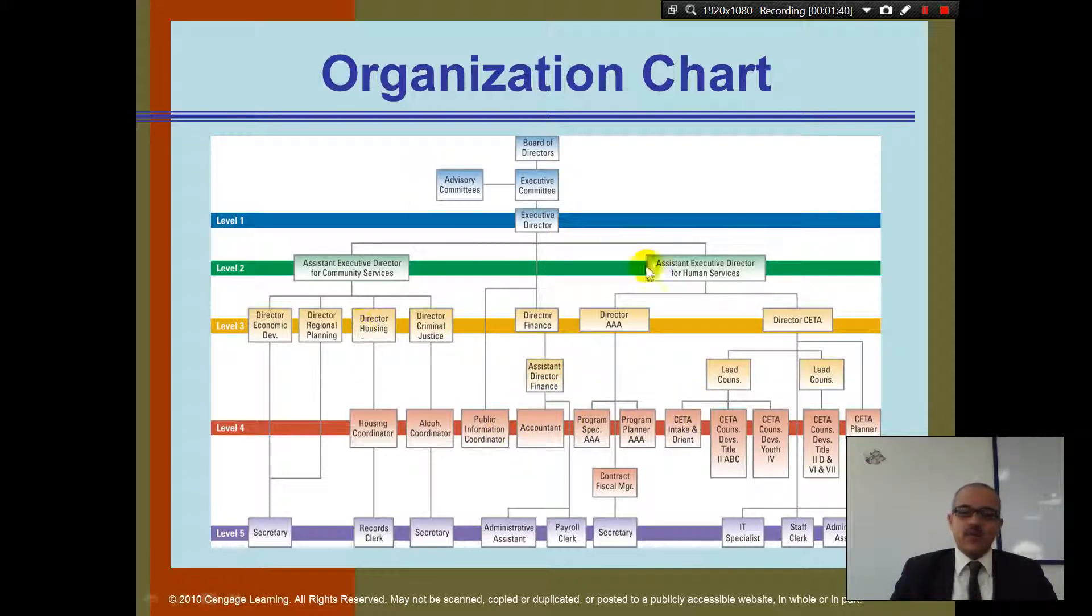This kind of gives you an idea about how organizations fall. This public information guy is level four. Does he report to anyone in level three? Maybe not. This guy will report to level one directly. Any questions on the organization chart?